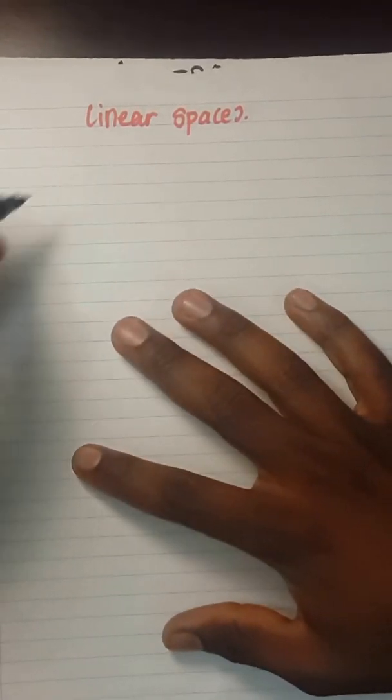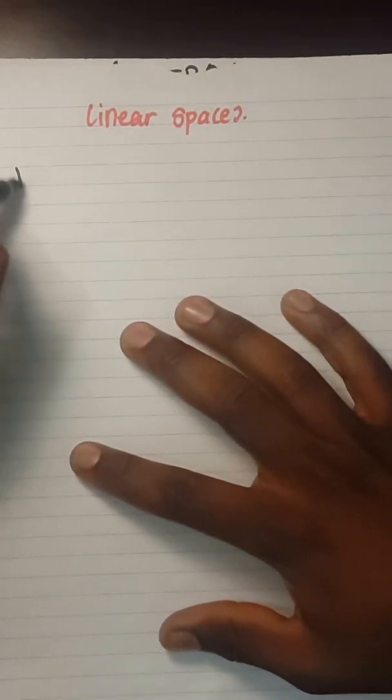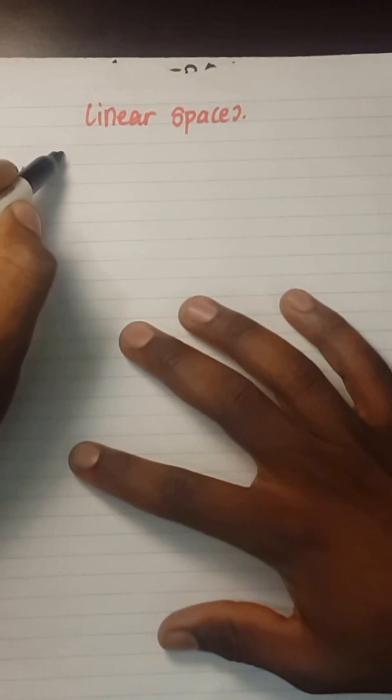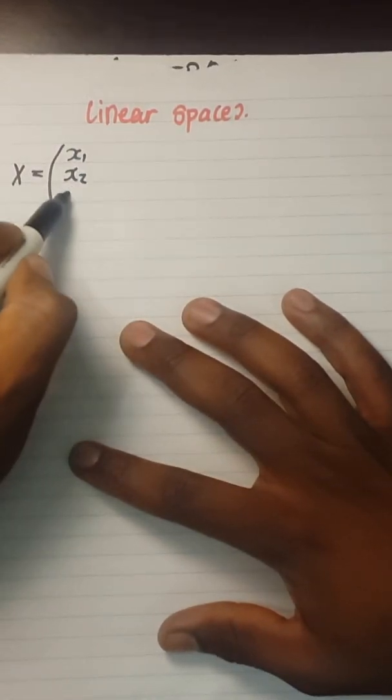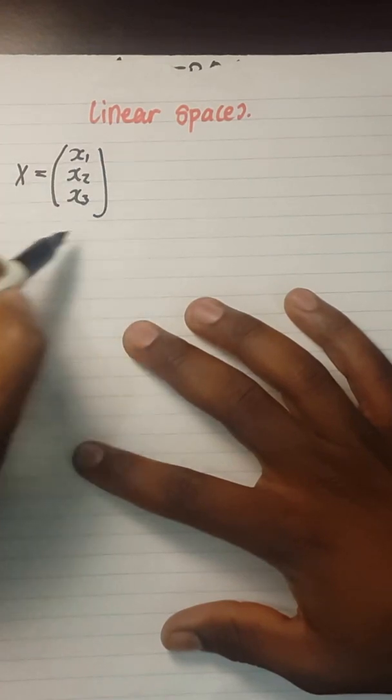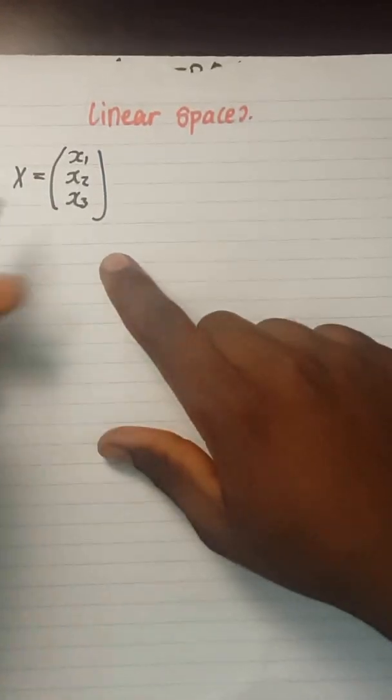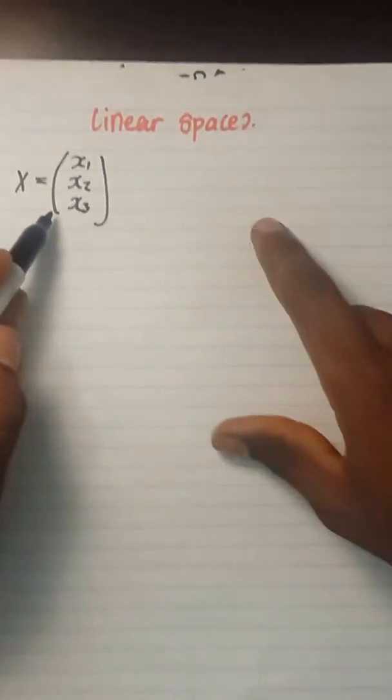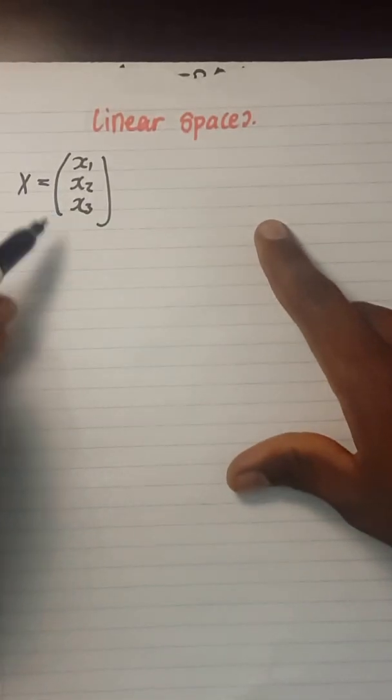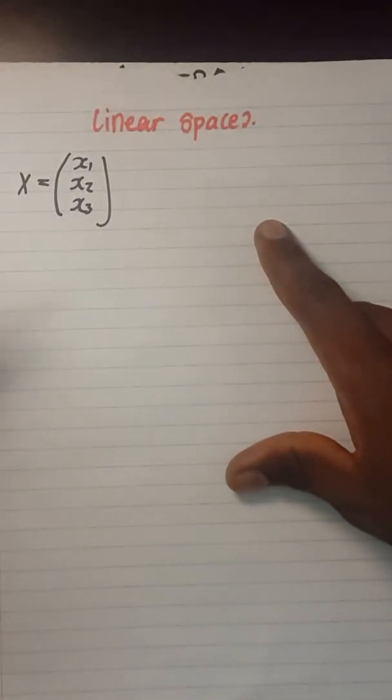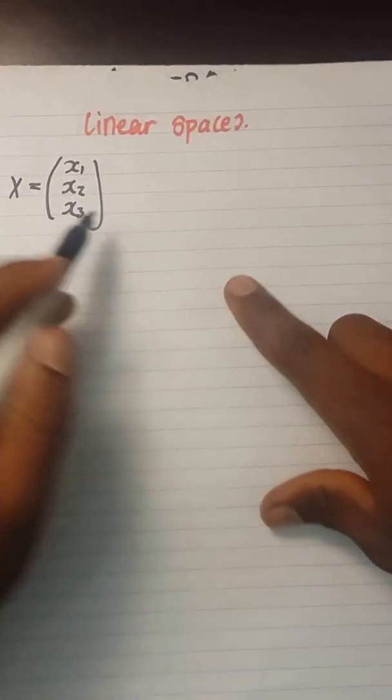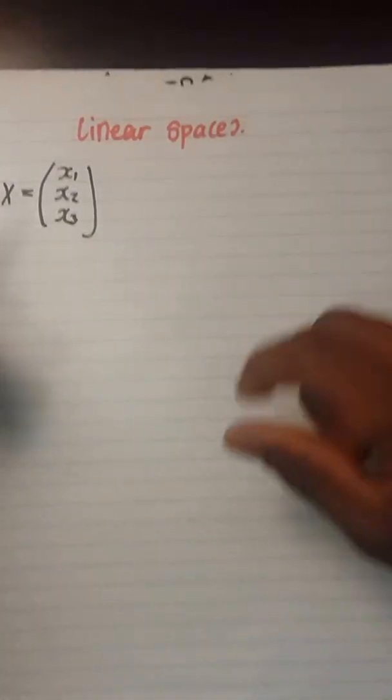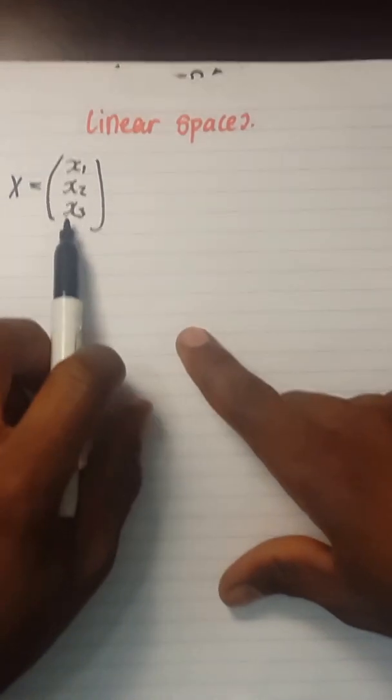Say we have a vector given as X with components X1, X2, and X3. You'll be given a vector and also some kind of rule in which this vector operates - a rule to follow to show that this vector forms a linear space.